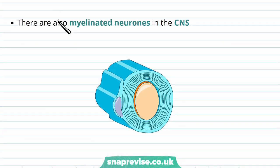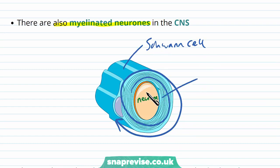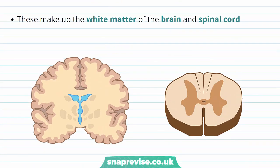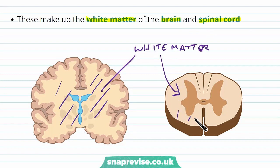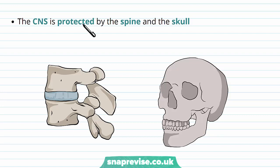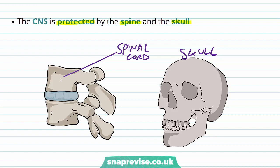However, the CNS does also contain some myelinated neurons, whereby the Schwann cell wraps its membrane round and round in a spiral-like fashion to add layers of myelin to the neuron. The myelinated neurons make up the white matter of the brain and the spinal cord. You can see the white matter in regions on each side of the brain, and in the spinal cord it forms the outside region surrounding the grey matter — it's the myelin that gives it that white colour. The CNS is the largest control centre of the body and it has to be protected: the spinal cord is protected by the spine, and the brain is protected by the skull.